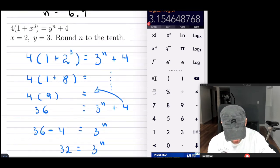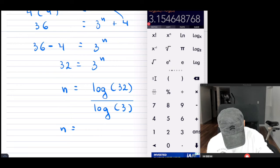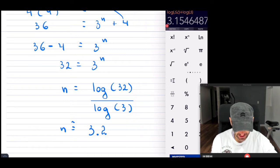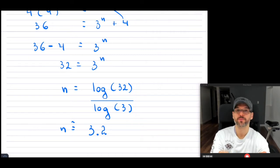So n equals, I know that I have to round this, round n to the 10th. So to the 10th. So that's 3.2. Alright, so that is example number two, once you substitute those in.